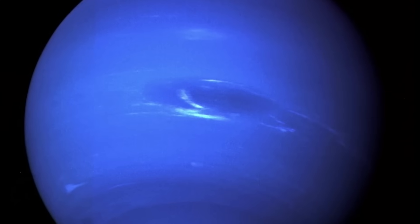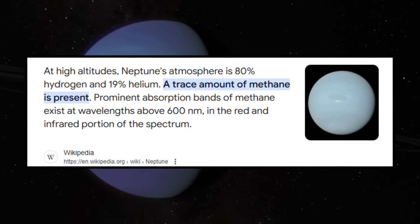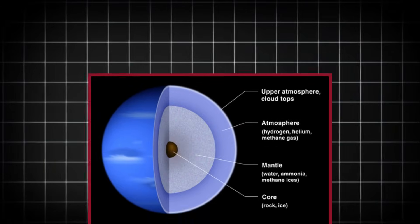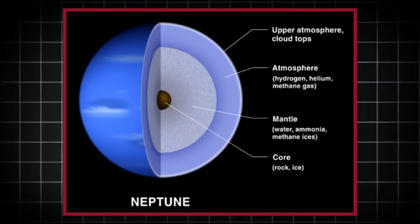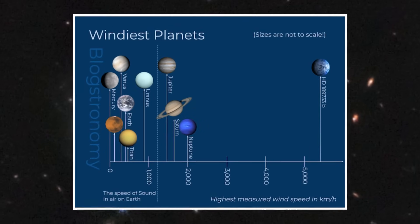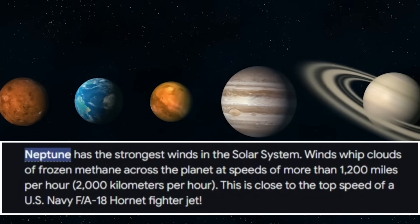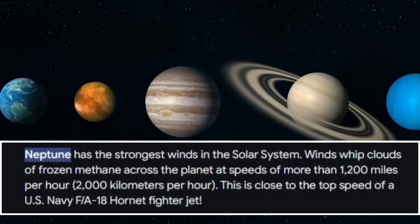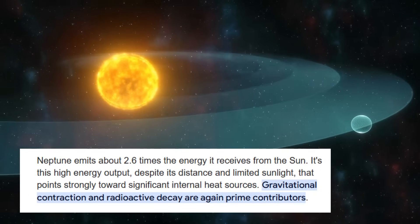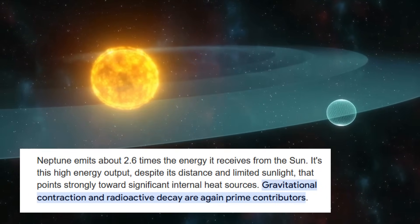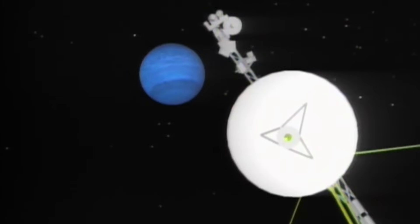Neptune is unique for its vibrant blue color, caused by the absorption of red light by methane in its atmosphere. Its atmosphere is composed primarily of hydrogen, helium, and traces of methane. The planet also boasts the fastest winds in the solar system, reaching speeds of up to 2,100 kilometers per hour. Despite its distance from the sun, Neptune radiates more heat than it receives, hinting at complex internal processes.